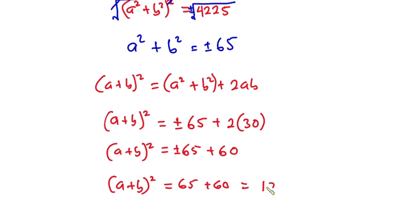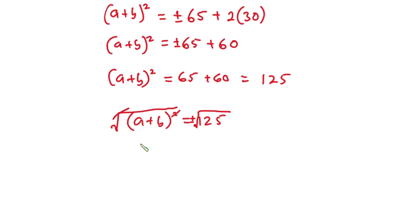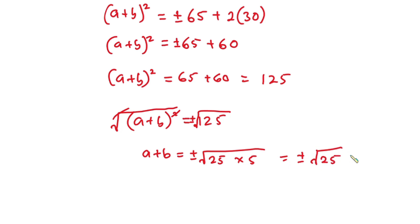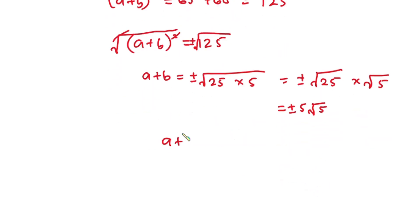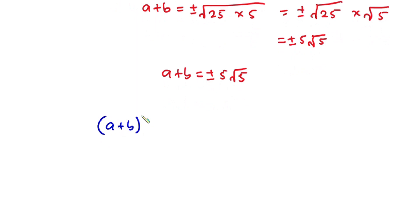Let's deal with the positive side first. We have 65 + 60 = 125, so (a + b)² = 125. Taking the square root of both sides, we have a + b = ±√125. Now √125 = √(25 × 5) = ±√25 × √5 = ±5√5. So a + b = ±5√5.